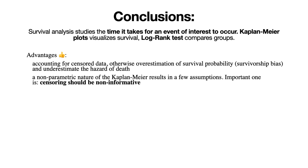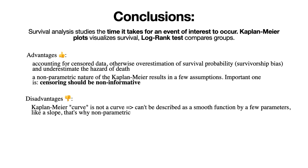The non-parametric nature of Kaplan-Meier results in few assumptions. An important assumption is that censoring should be non-informative. If we know why a person withdrew from the study or went missing, that is useful information that must be included as an extra variable in the model. If we have no idea why the person was missing, we cannot analyze it further — and this is actually an advantage of survival analysis: it draws the most information out of non-informative data. Of course, survival analysis is not perfect and has a couple of disadvantages. The first is that Kaplan-Meier is not actually a curve at all — it cannot describe survival as a smooth function by a few parameters like a slope, which is why it's non-parametric.